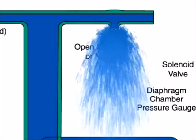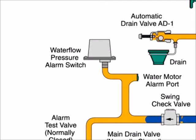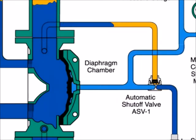Water flows through the system to the sprinklers and the water flow pressure alarm switch activating the alarm. Water also passes through the trim to the automatic shutoff valve to close this valve. Once closed, it will prevent the diaphragm chamber from becoming re-pressurized. This protects against accidentally shutting the system off if the solenoid valve were inadvertently closed.